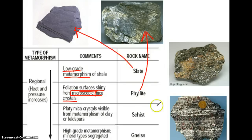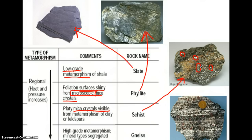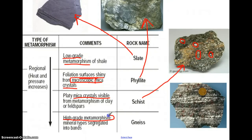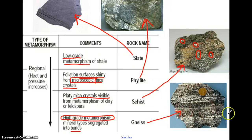If there is even more heat and pressure, the rock becomes schist. In schist, we are going to be able to see the mica crystals — they are visible. If you remember what mica looks like, the muscovite mica or biotite mica we studied when we looked at minerals, they are very flat and very shiny minerals. In schist, you can see crystals of mica. If there's high-grade metamorphism — a lot of heat and a lot of pressure — the minerals become aligned into bands. If you look at a piece of gneiss, you'll actually see bands or stripes of white minerals, black minerals, very much looking like a zebra.